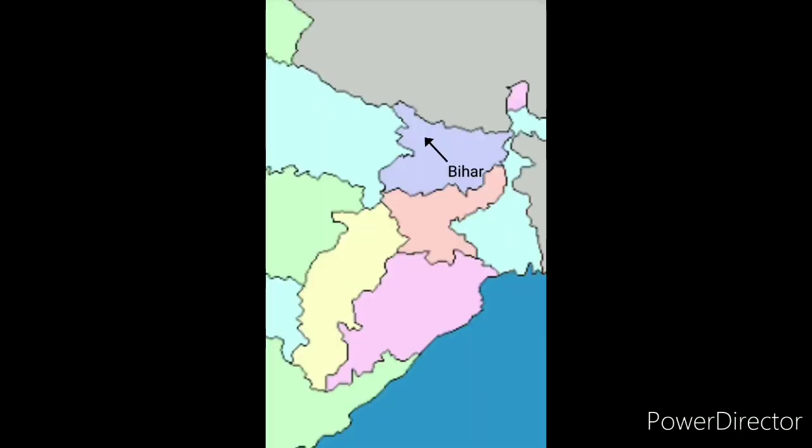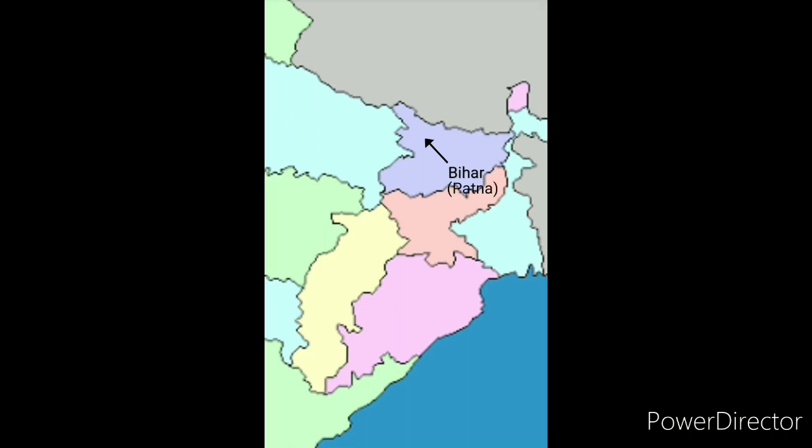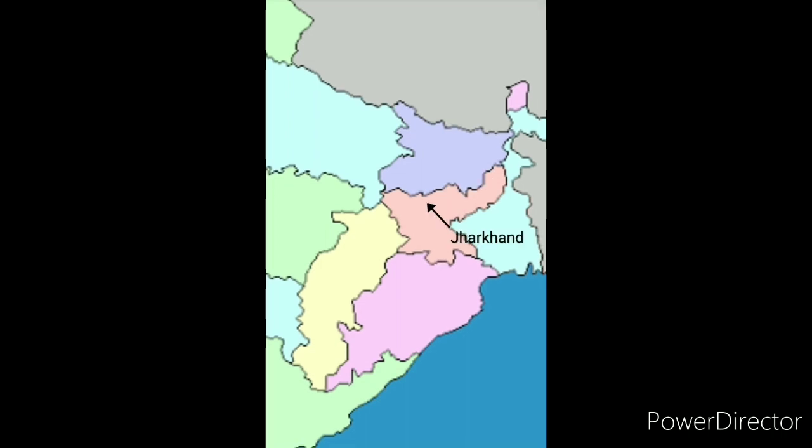In the east we have Bihar and its capital is Patna. Below Bihar we have Jharkhand, which was also earlier a part of Bihar, and its capital is Ranchi.